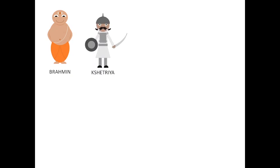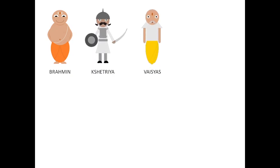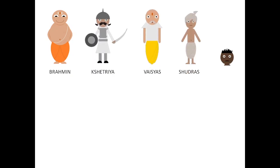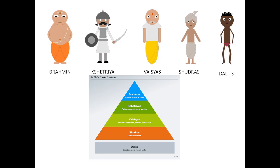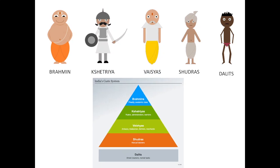In India, there are said to be five types of caste system known as Brahmins, Kshatriyas, Vaishyas, Shudras, and Dalits. They have been arranged in a stratification of pyramid shape.